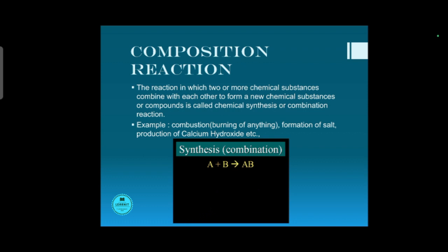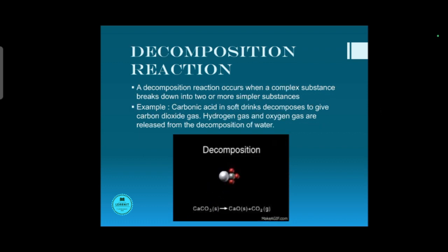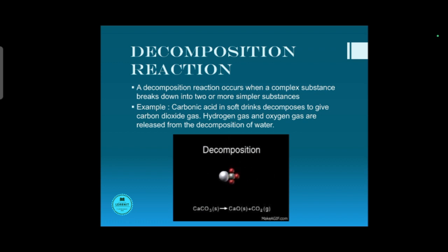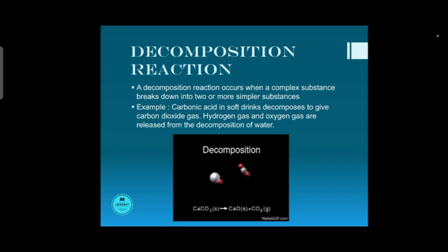Let us learn about decomposition reaction. A decomposition reaction occurs when a complex substance breaks down into two or more simpler substances. For example, calcium carbonate gets decomposed and forms calcium oxide and carbon dioxide gas. Calcium carbonate is a complex substance that breaks down into the simpler substances calcium oxide and carbon dioxide.